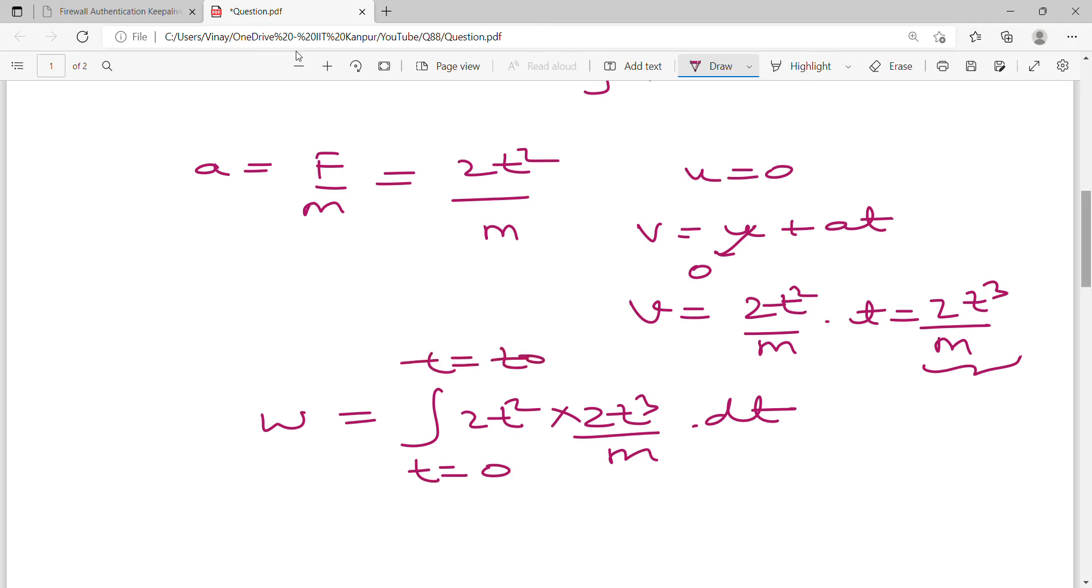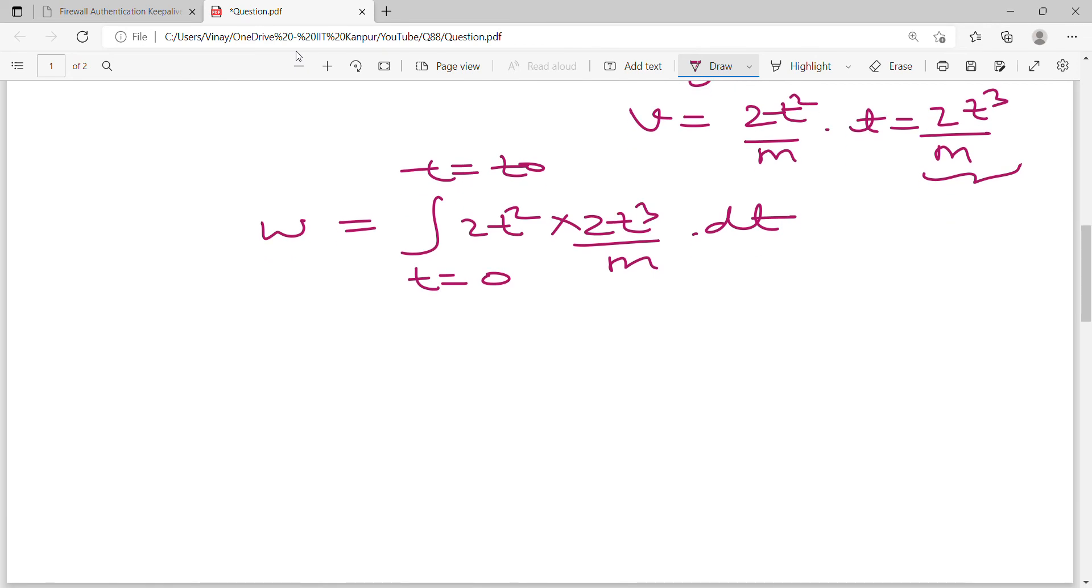So how much is it? 4 upon M, 2t² upon M. And how much is it? t to the power 5 dt. Where is it? 0 from t₀. x to the power n, derivation of course. You know integration, n plus 1 upon n plus 1.